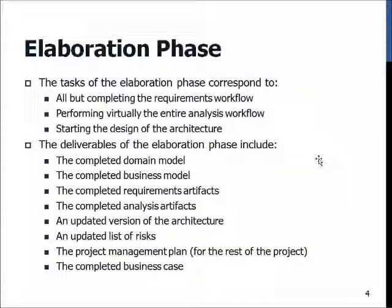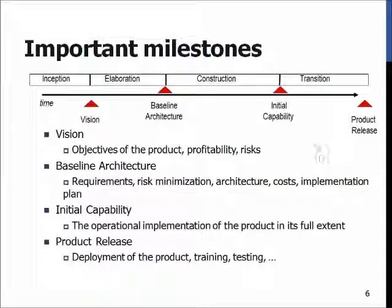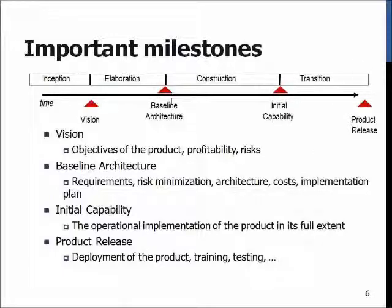So considering this, we'll go to the actual milestones, which is a new concept I have not talked about earlier. In inception, the milestone was the so-called vision — it means that we have an objective for the product, we have an idea of profitability in our project, and we know what the risks are involved in the development work. In baseline architecture, which is the main objective of the elaboration phase, the idea is that we have the requirements, we know how to minimize the risks involved, we have the architecture, we know the costs, and we have a solid plan for implementing the software, since this is the final turning point before actually starting development.